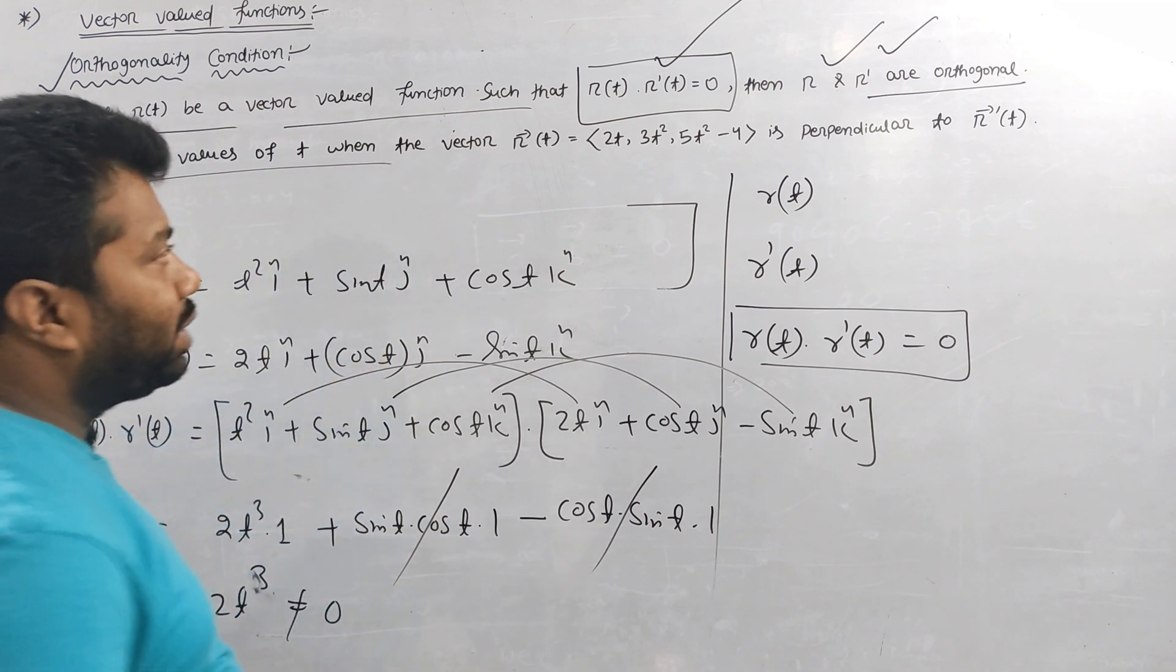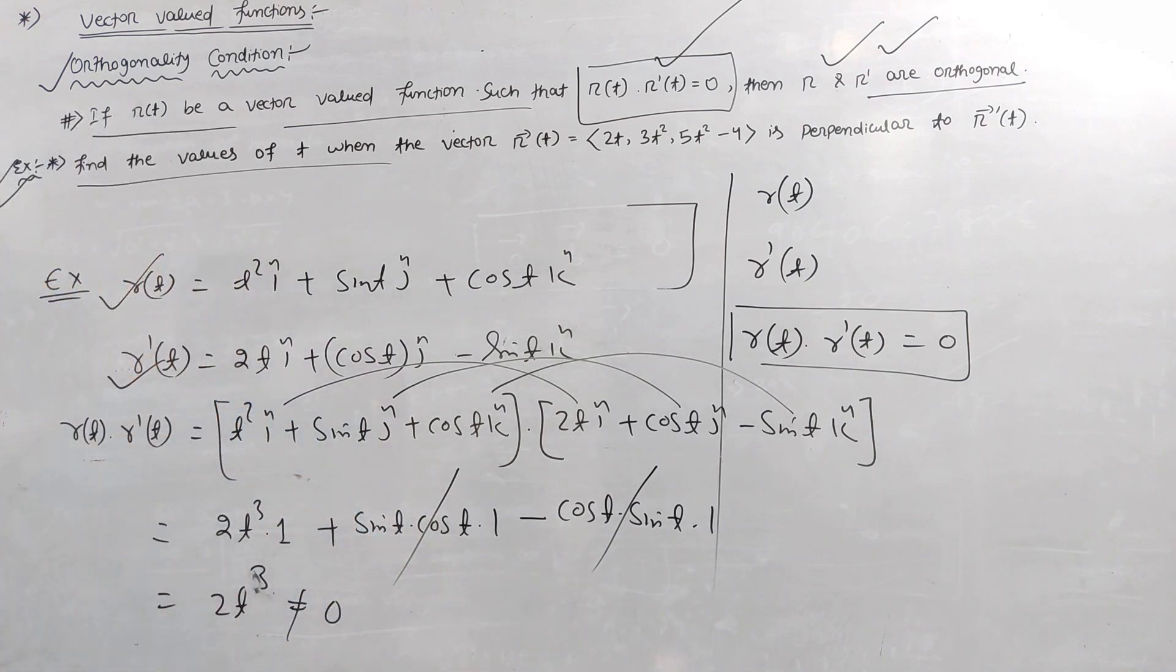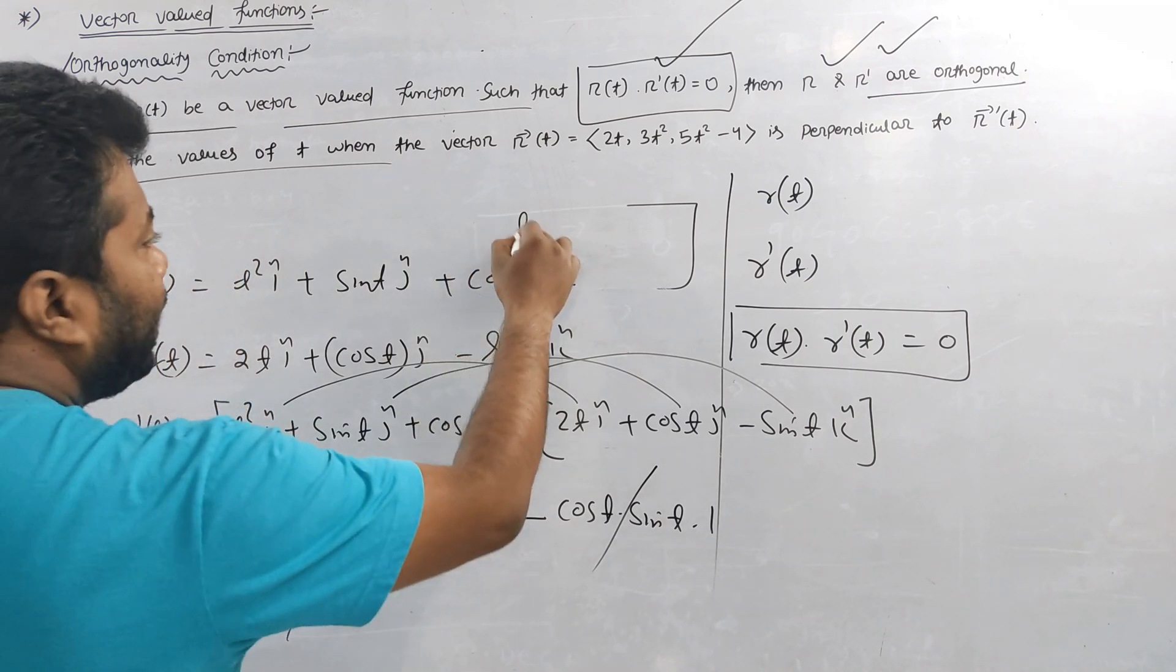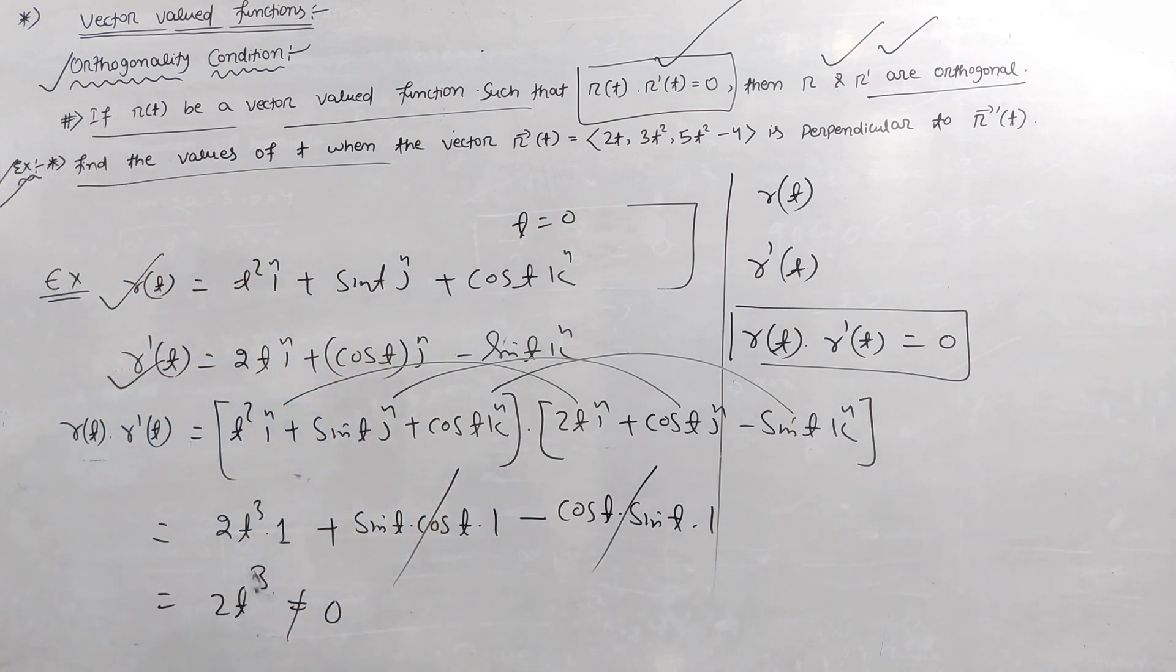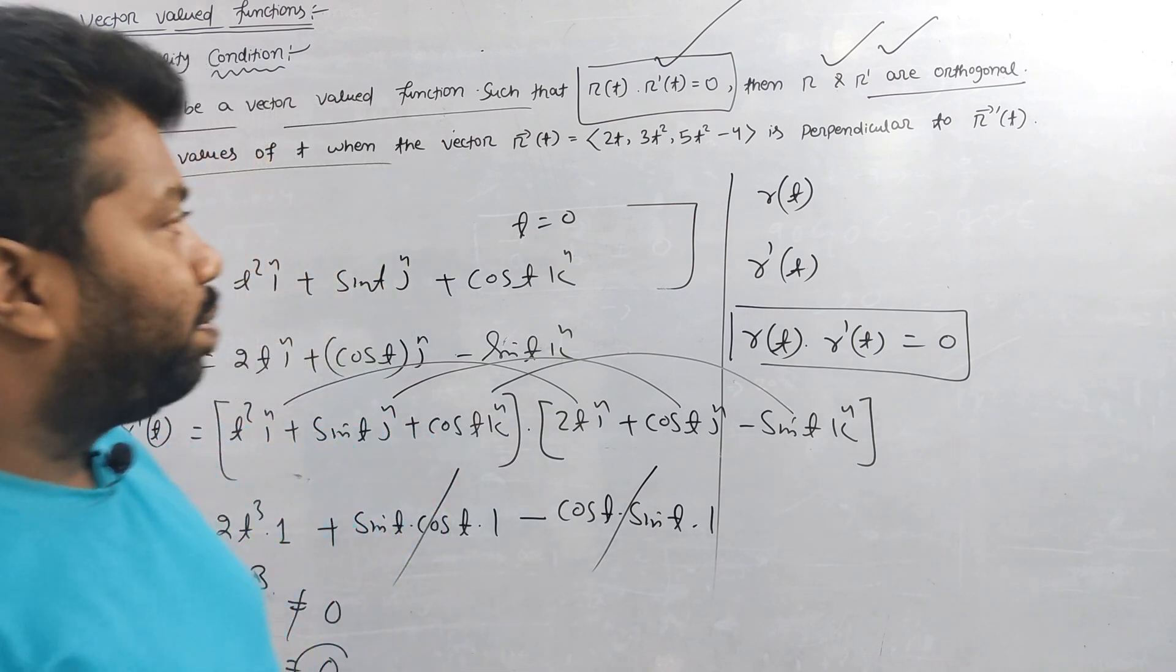Let me give you a question. Find the value of t such that t is perpendicular. If you see t is equal to zero, then you can see r of t, r dash t. 2 into t, then you can see zero. Then if you see t value of zero, then you can see r of t and r dash t are orthogonal.